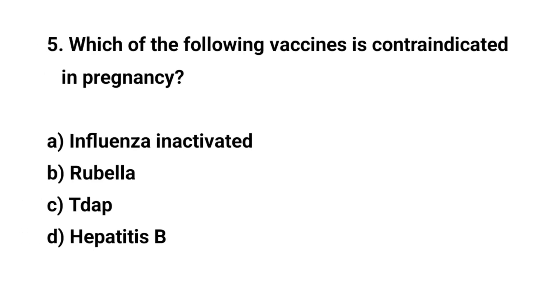Question number 5. Which of the following vaccines is contraindicated in pregnancy? The right answer is B: Rubella.